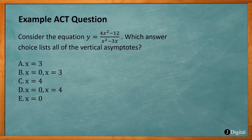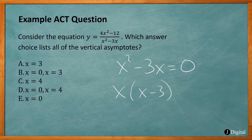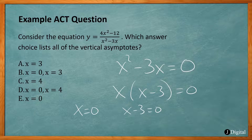Another example ACT question: Consider y = (4x² - 12) / (x² - 2x). Which answer lists all the vertical asymptotes? Set the denominator equal to 0: x² - 2x = 0. Factor out x: x(x - 3) = 0. Set each factor equal to 0: x = 0 and x - 3 = 0 gives x = 3. So our vertical asymptotes are at x = 0 and x = 3 — answer choice B.